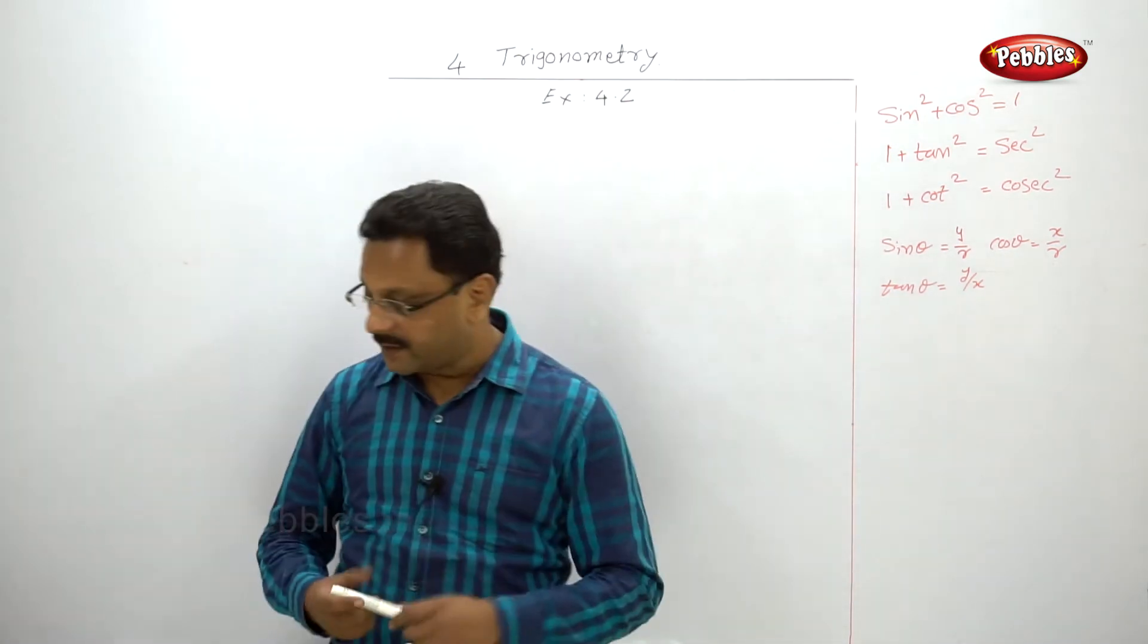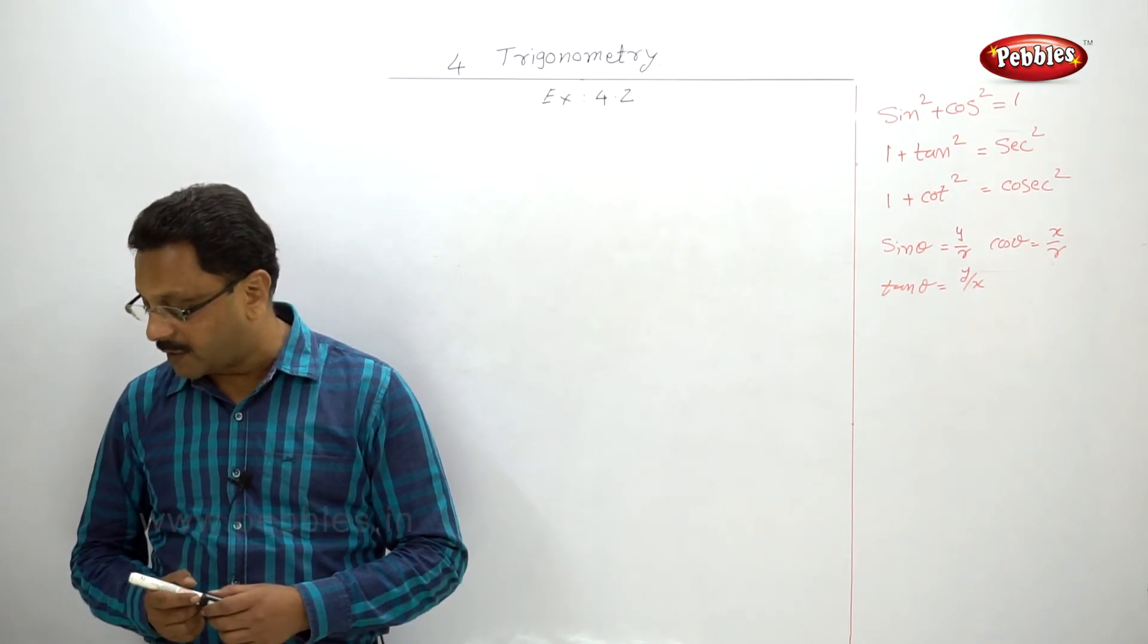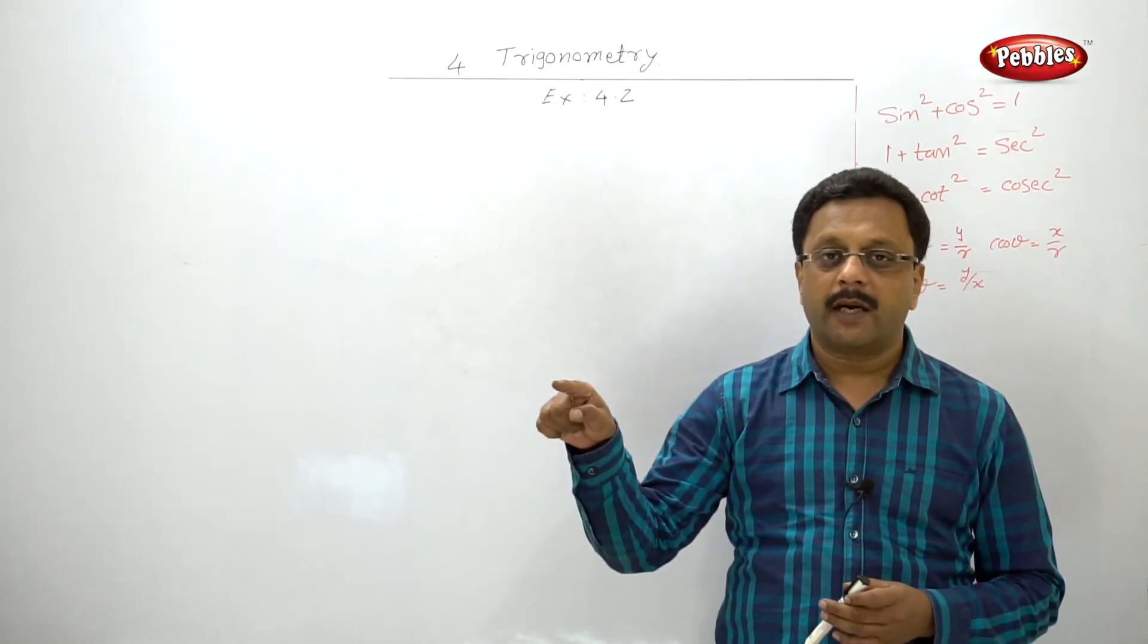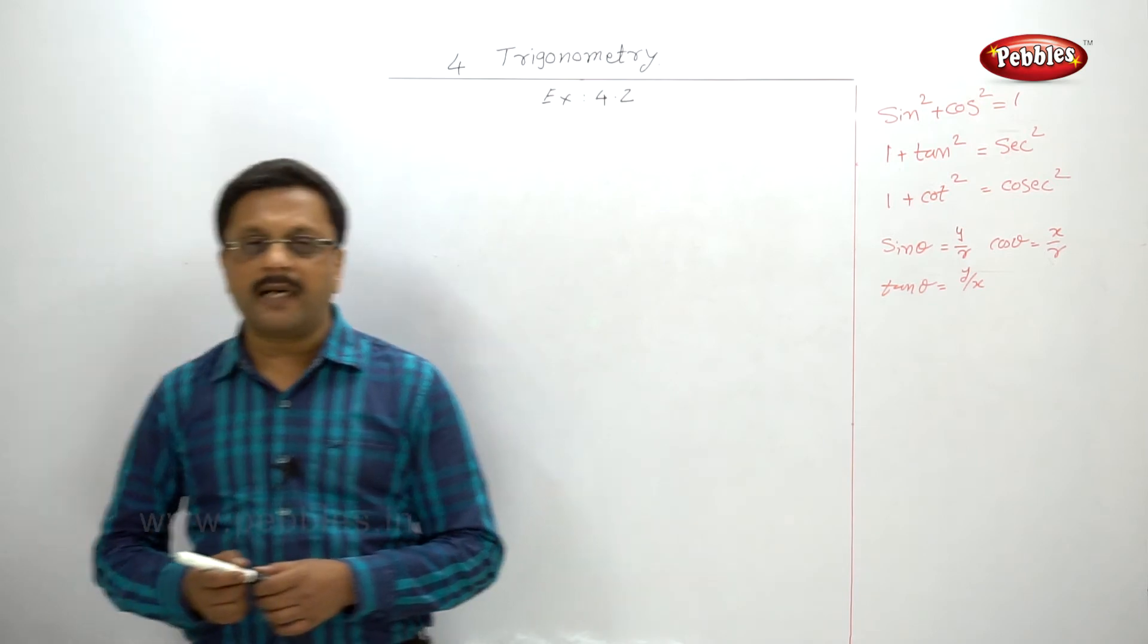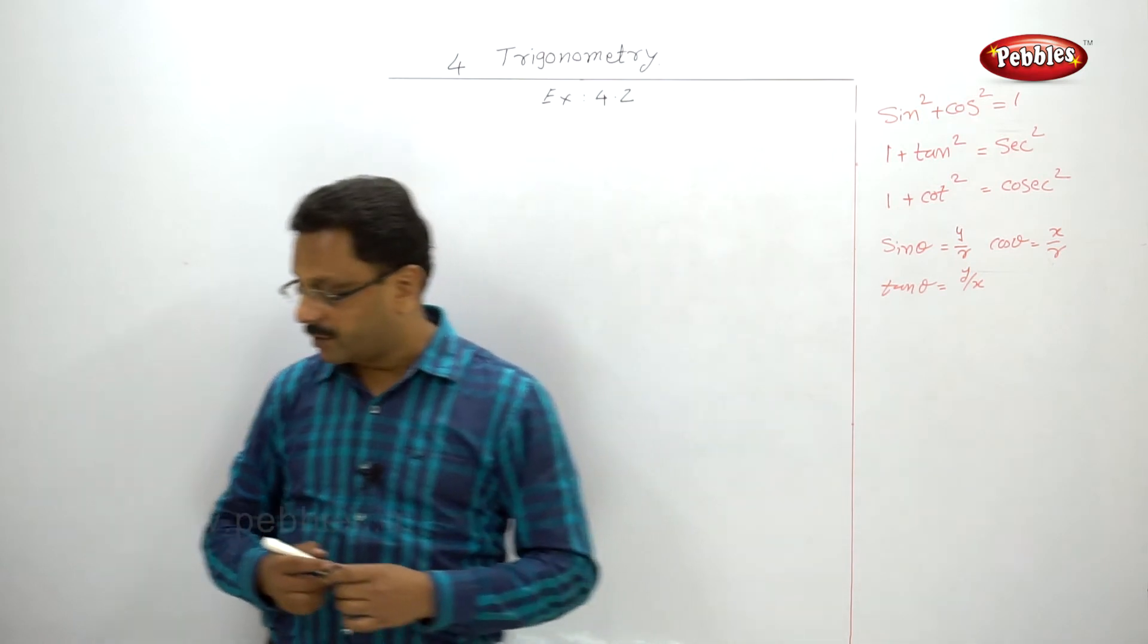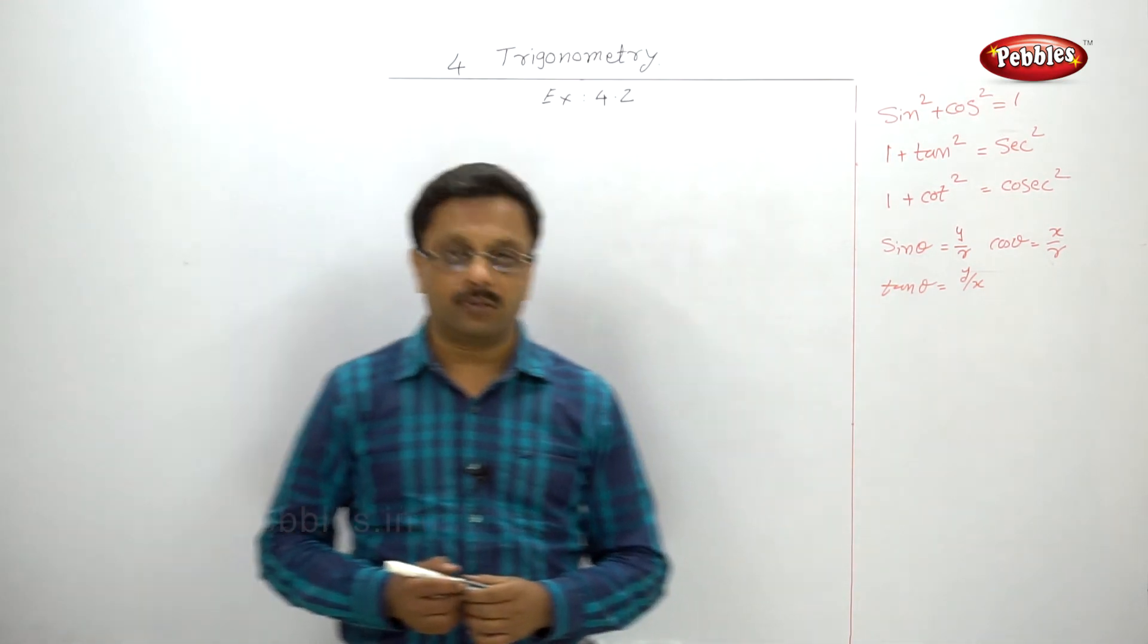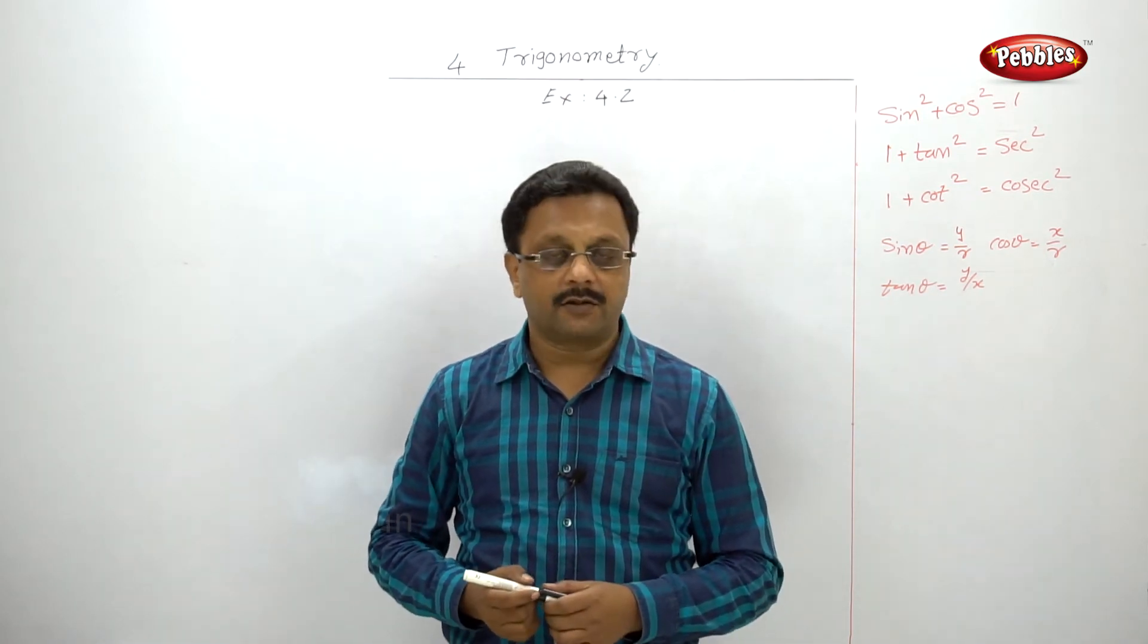For example, find where the angle lies if the terminal arm passes through a few points given: (5, -7) - fifth positive x, minus seven negative, so fourth quadrant. Then (-8, 1) - x is minus, y is plus, so second quadrant. Then (-3, -3) - both are negative, so third quadrant. And (0, 2) - zero and two, which lies on y-axis, quadrantal angle.